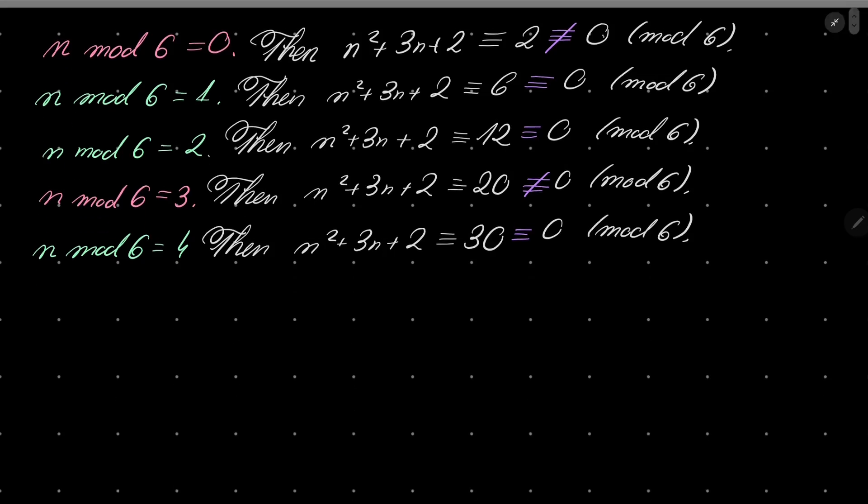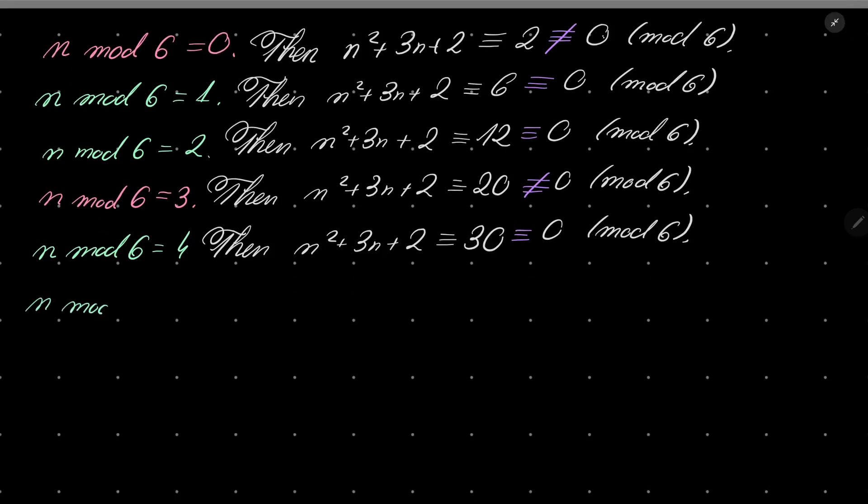Finally, last case: n ≡ 5 (mod 6). What then? Well, then n² + 3n + 2 is congruent to 25 + 15 = 40, plus 2 is 42. 42 is congruent to 0 modulo 6.